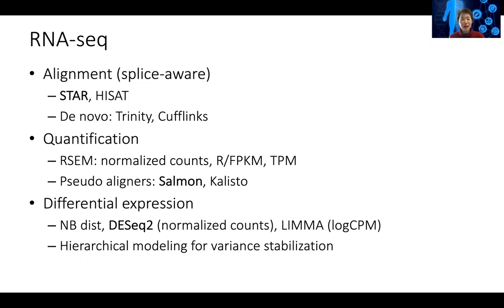After alignment, we need to do quantification. The current most accurate approach is RSEM. We talked about different ways of representing quantification: normalized read count, CPM (counts per million) which only normalizes by library size, FPKM or RPKM which also normalizes by gene length, and TPM. The difference between FPKM and TPM is whether you normalize by library size first or gene length first — this makes quite a big difference. Currently TPM is considered the gold standard for reflecting gene expression levels.